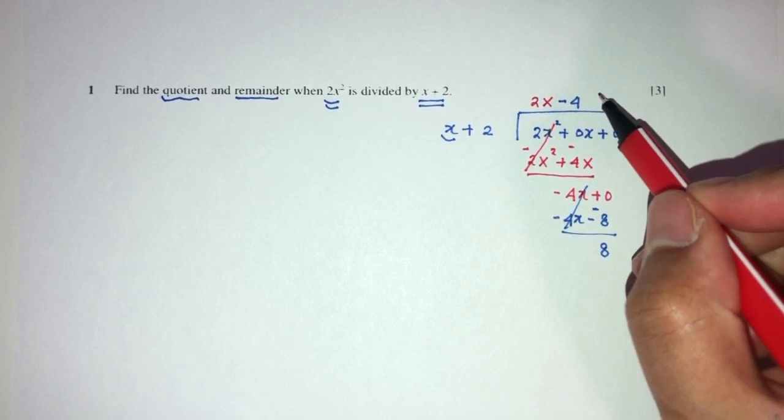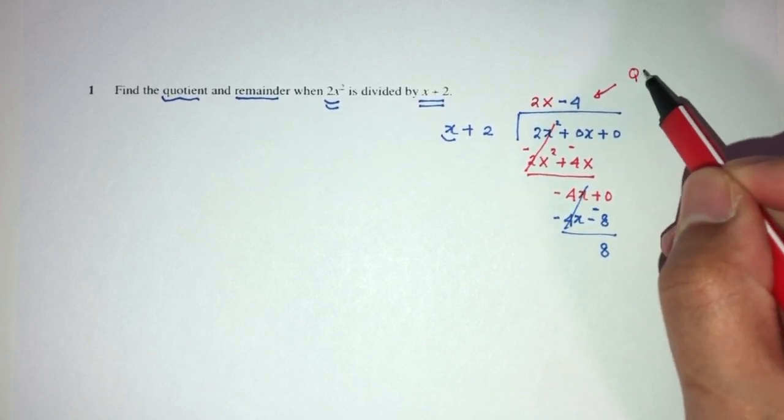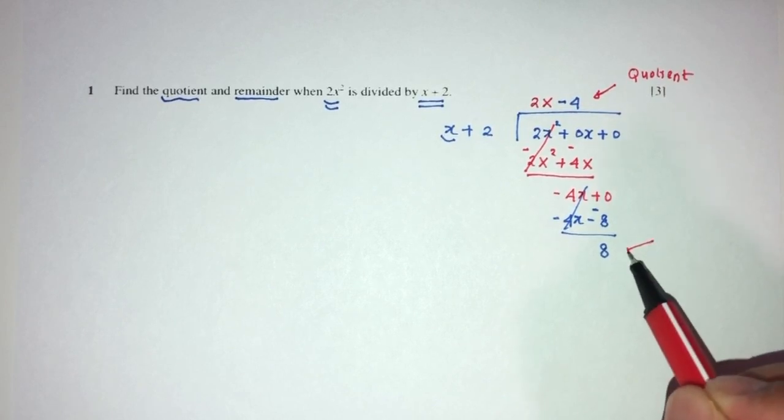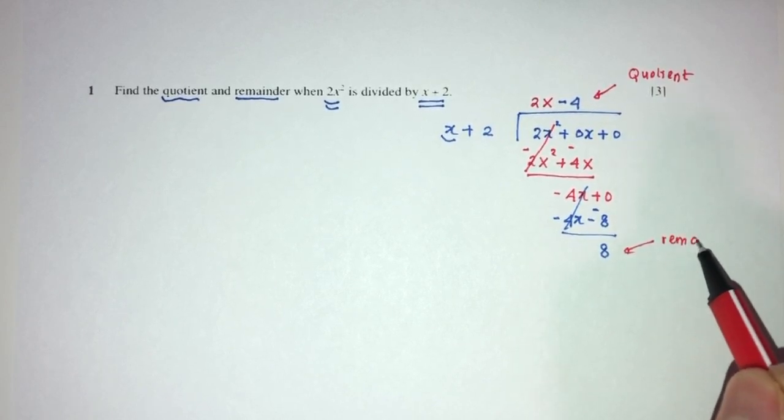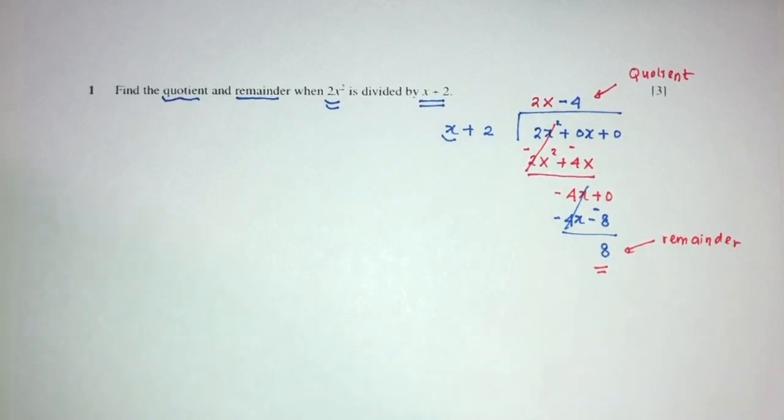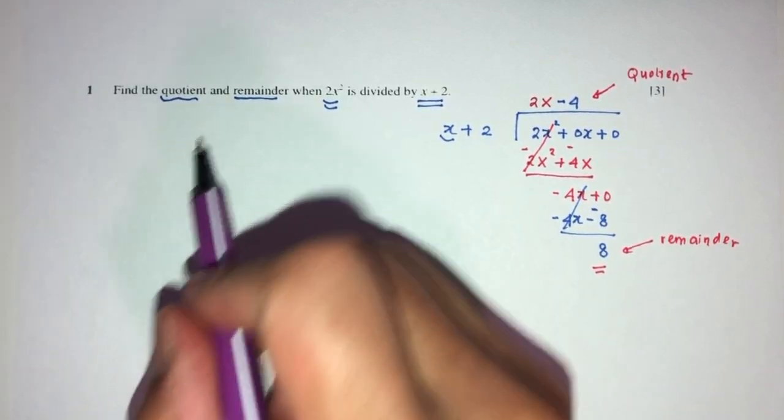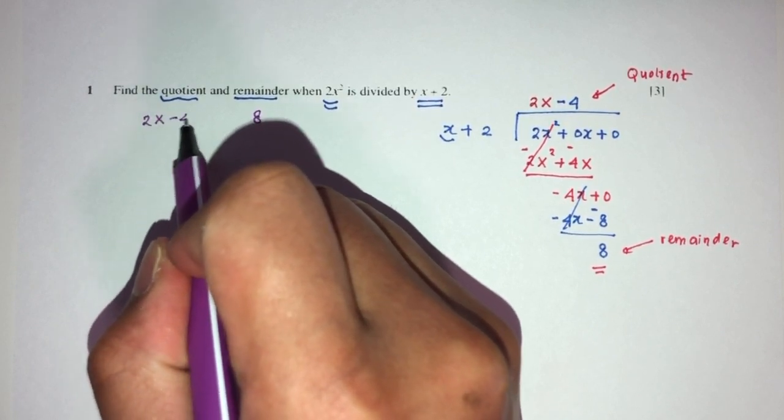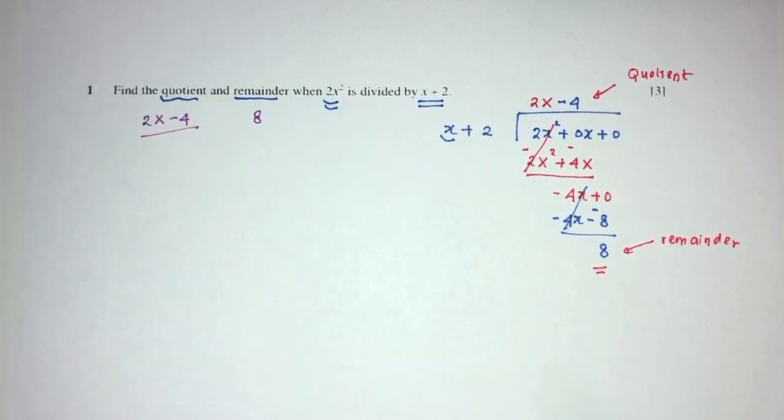As you can see, the one on top is called the quotient, and the one remaining here will be called the remainder. So this is the two things you need to find for your answer in part question number one. So remainder will be 8, and quotient will be 2x minus 4. This is your question number one.